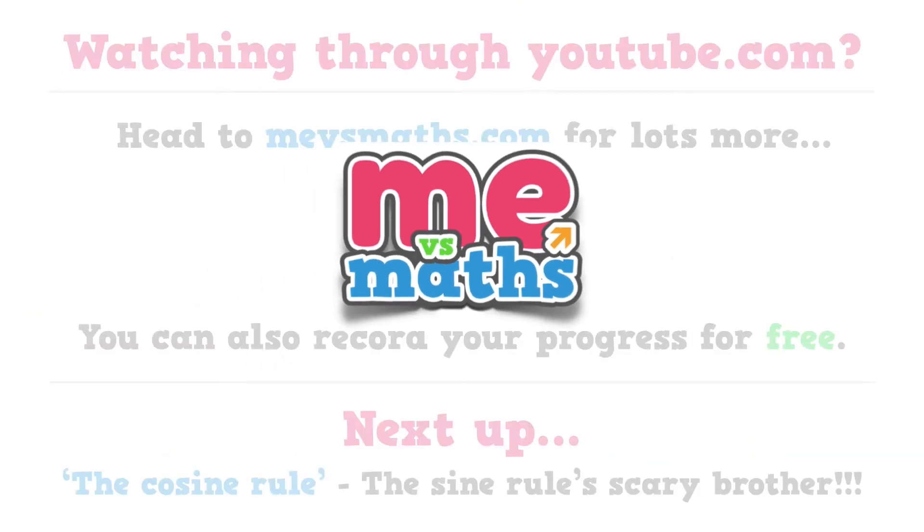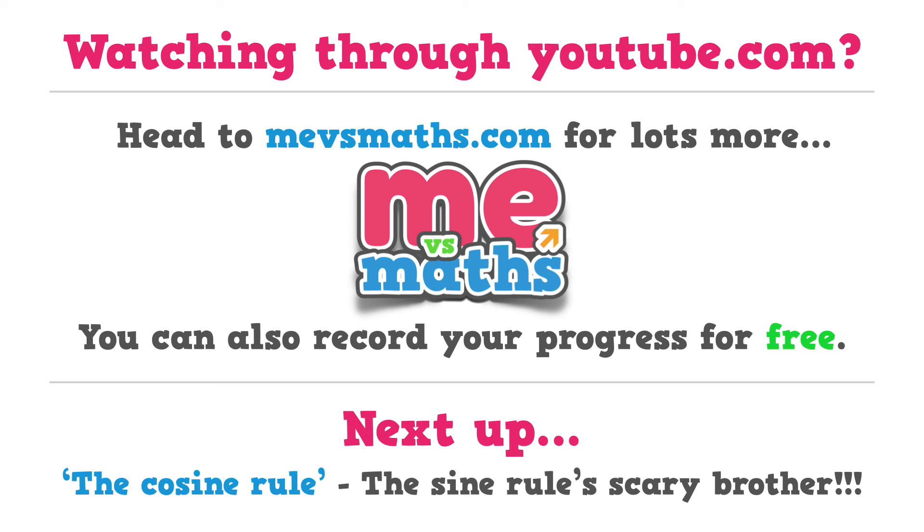Okay now you know hopefully how to find both acute and obtuse angles using the sine rule. Next we'll move on and start to look at the cosine rule. As always thanks for watching and don't forget to visit the website at mevsmass.com. Enjoy the rest of your day and bye for now.